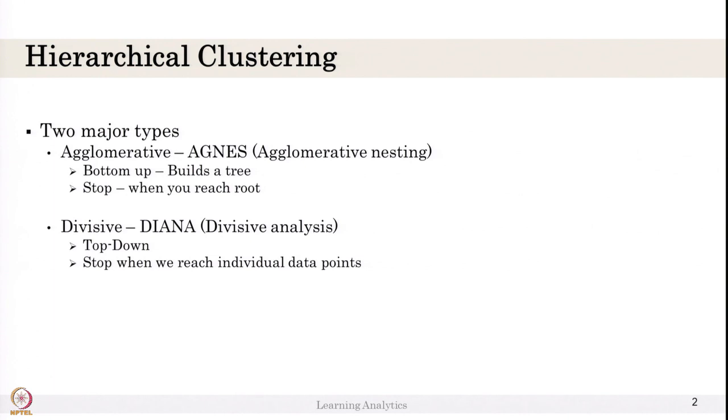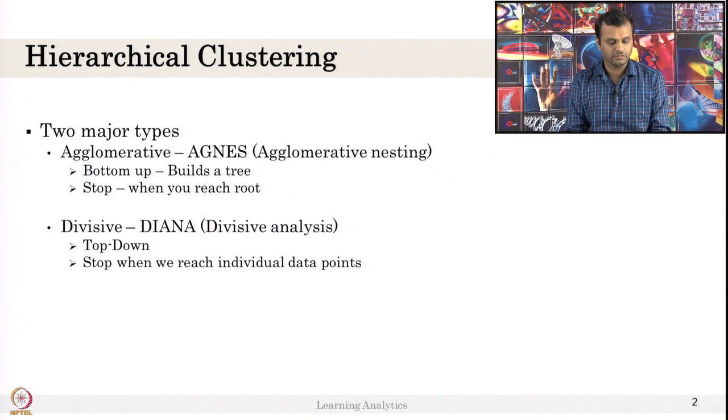There are two major types within hierarchical clustering. One is agglomerative, called agglomerative nesting, like AGNES. We will see that in detail in this class. The other one is divisive analysis, like DIANA.